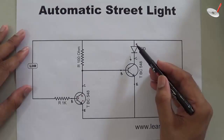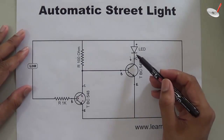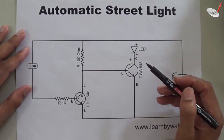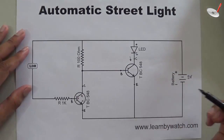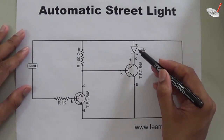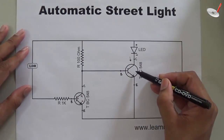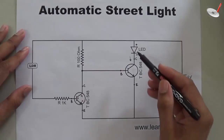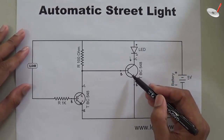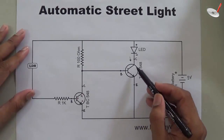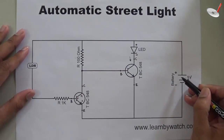When the LED gets forward biased it emits light. For forward bias, its positive terminal should be connected to the positive terminal of the battery and the negative terminal to the negative terminal. In this circuit, the LED is connected to the positive terminal but its negative terminal is connected through a transistor, so the LED will glow only when this transistor is working.